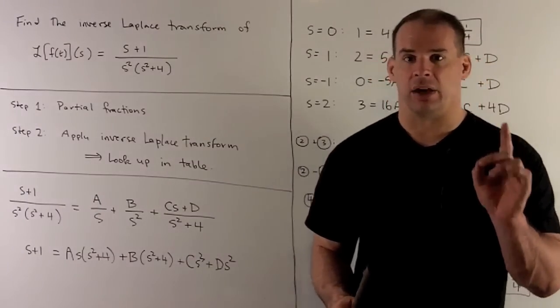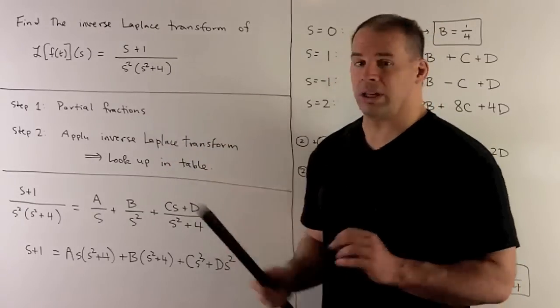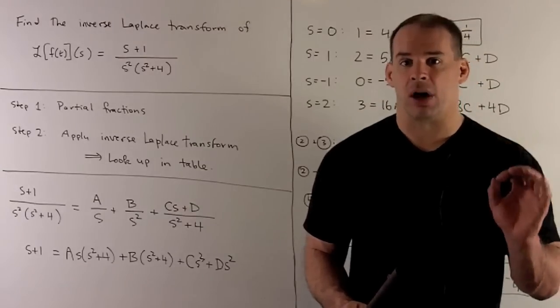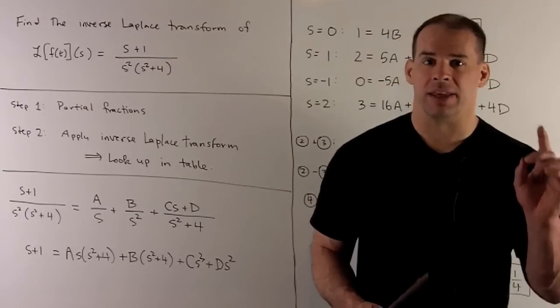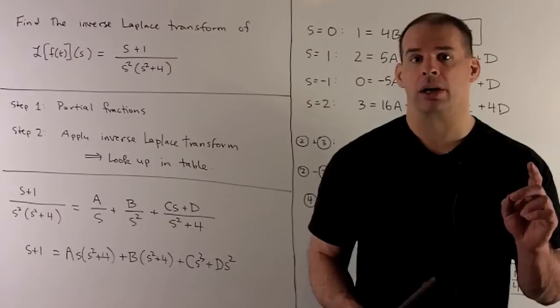So, the idea here is we're going to take our Laplace transform, go to our list, see if it matches with any functions that we have. In this case, we're not going to have a match. So that means we'll need to do more work.